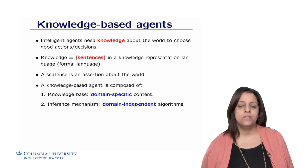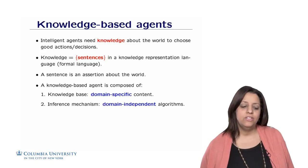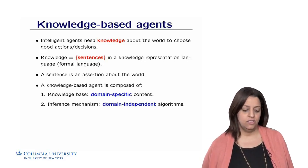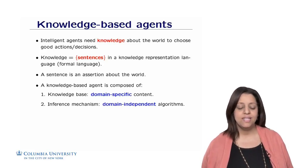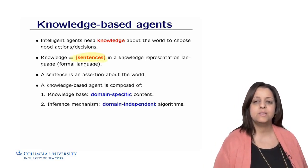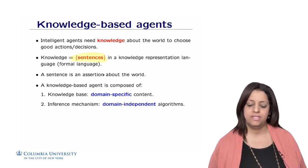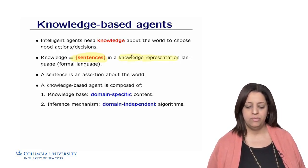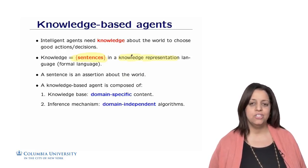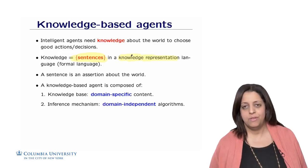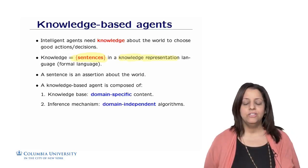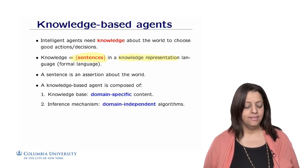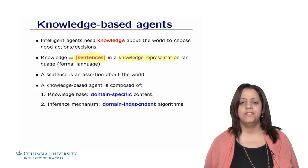The key concept here is knowledge — information about the world that allows the agent to choose good actions or decisions. Knowledge is a set of sentences expressed in some formal knowledge representation language, which must be formal to avoid ambiguity. A sentence is an assertion or proposition about the world. A knowledge-based agent is composed of two elements: a knowledge base and an inference mechanism.